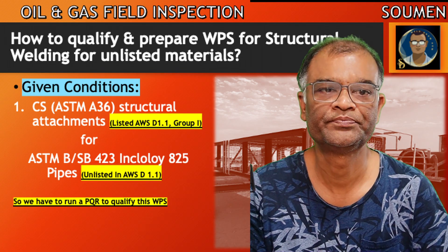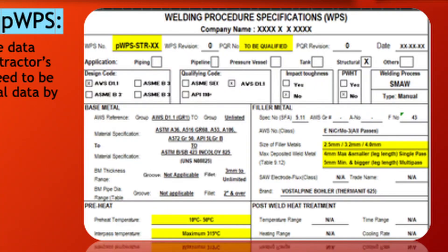Let us start. First, let us check the pre-WPS. Everything highlighted in yellow in the pre-WPS are the things that will be verified during the procedure qualification test. First of all, the PWPS designation needs to be changed to WPS and a PQR number needs to be assigned.